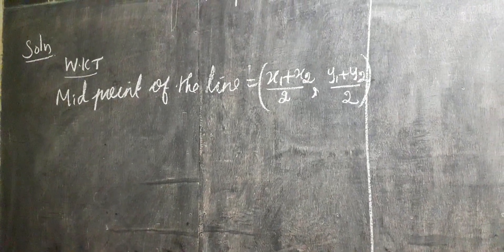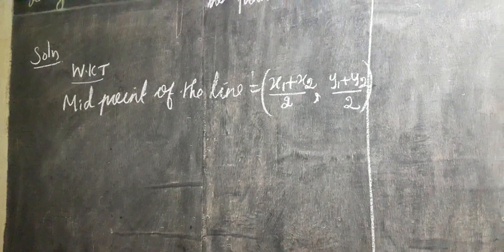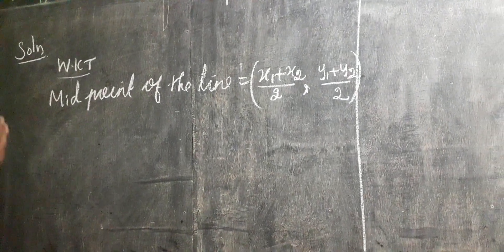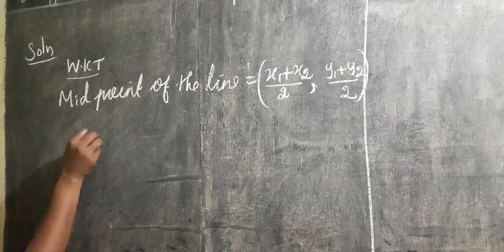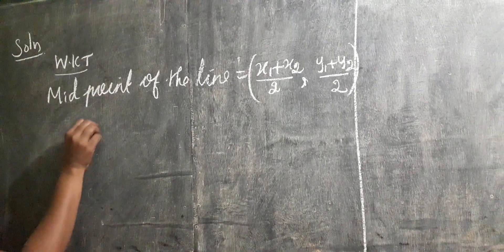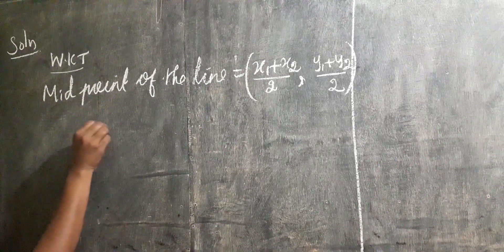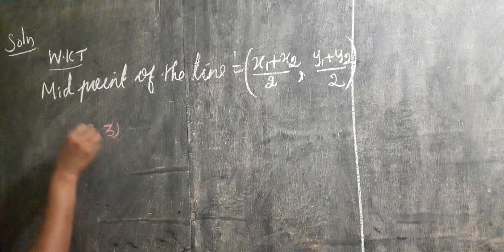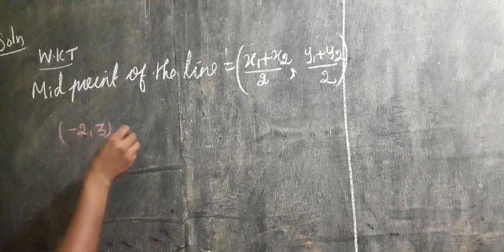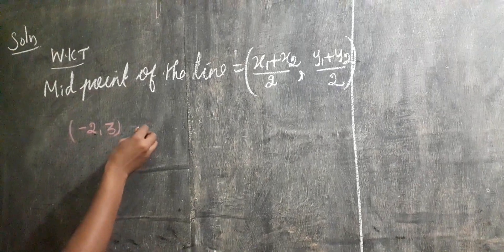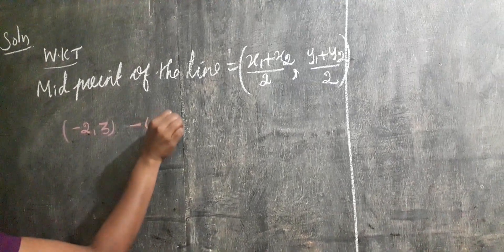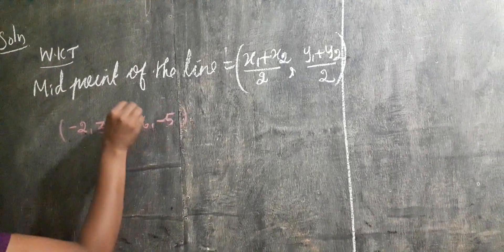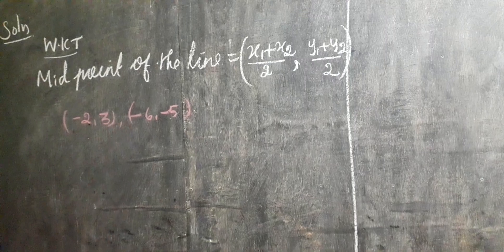What are the given two points? The given coordinates: the first point is minus 2, comma 3, and the second point is minus 6, comma minus 5. They have given two coordinates.